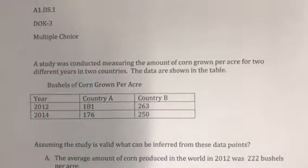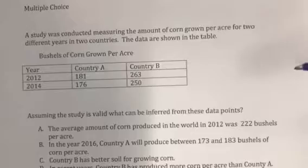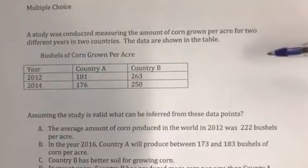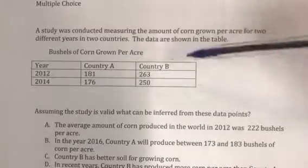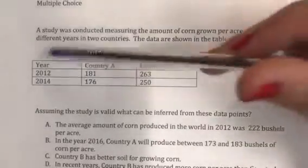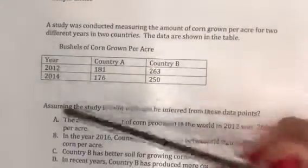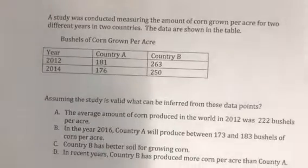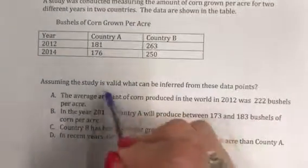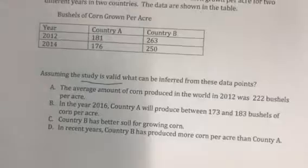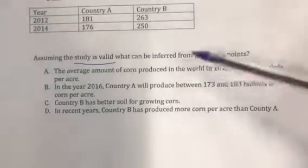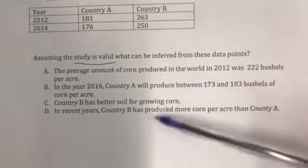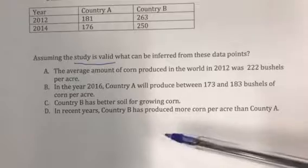Looking at this specific example, this is a study that was conducted measuring the amount of corn grown per acre for two different years in two countries. We have the data shown in a frequency table. One thing we need to know is that the study is valid — we need good data. We can't infer anything if the data is bad. Once we know about this data, we need to decide which of these can be inferred.